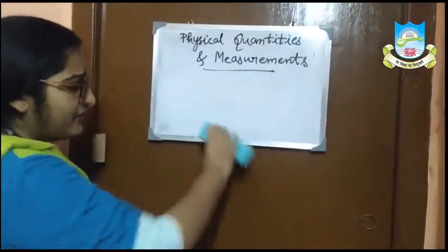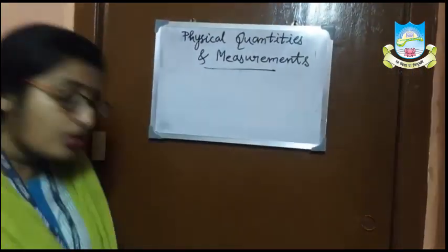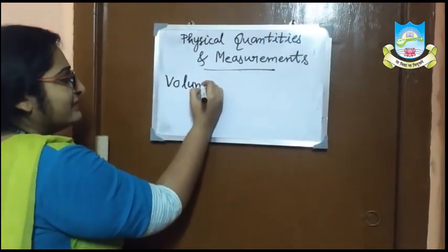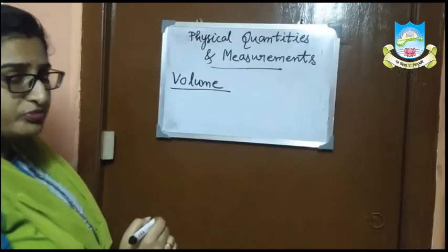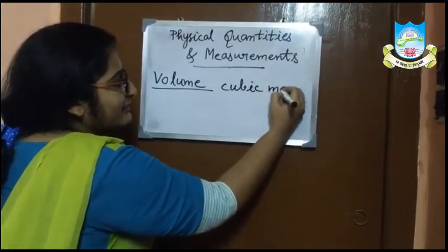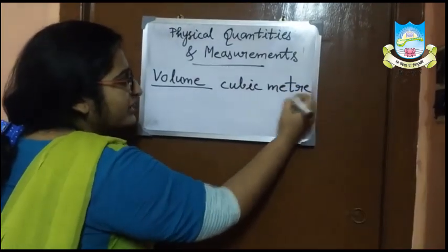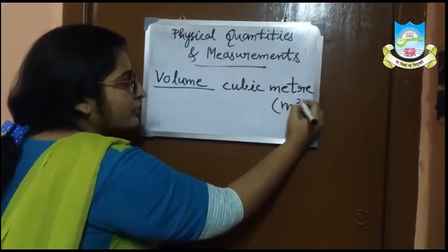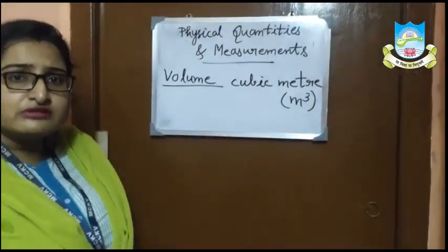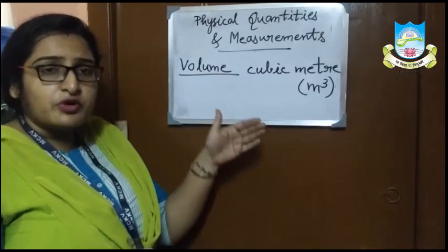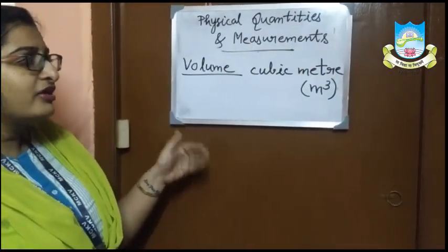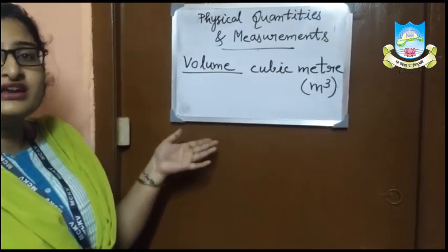Now we will discuss about volume. Volume is the space occupied by an object. The SI unit of volume is cubic meter. The smaller units are cubic centimeter, cubic millimeter, etc., and there are bigger units also.